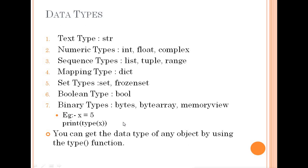When you write x equals 5, Python will automatically detect what type of data it is. The type() function returns the data type of any object. If any object is given to the type() function, it will print the data type. So print(type(x)) where x equals 5 will display the type.